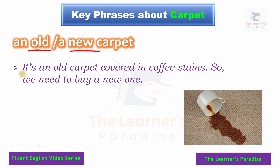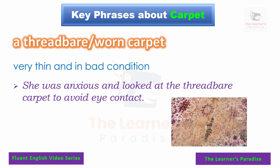A carpet can be old or new. Example sentence: it is an old carpet covered in coffee stains, so we need to buy a new one. If you spill coffee on the carpet, the stain will stay there forever if you don't wash it. Some stains can be removed with washing, but others cannot — they make your carpet look unattractive.